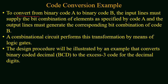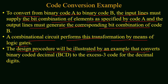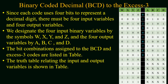To convert from binary code A to binary code B, the input lines must supply the bit combination of elements as specified by code A, and the output lines must generate the corresponding bit combination of code B. We require a combinational circuit that performs this transformation by means of logic gates. The design procedure stated above for a code converter circuit will be illustrated by an example that converts BCD (binary encoded decimal) to XS3 code for the given decimal digit. We will now start the design procedure for BCD to XS3 code converter.